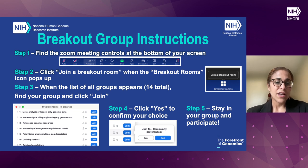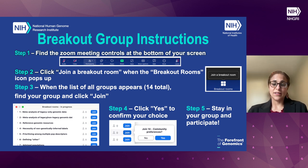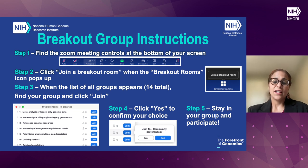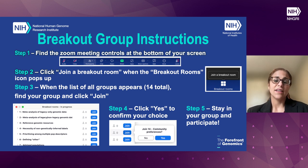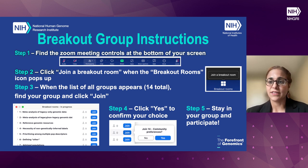That will trigger the list of all the breakout groups available to you — seven total. Find the one you're interested in, click 'join,' and that will trigger another confirmation box. That will take you to the breakout group. We hope you have a really good discussion. The moderators and note takers should have some key guiding questions for you to consider together. Five minutes before your time ends, we will send a reminder — it's an opportunity to wrap up and write your recommendations. Then we'll come back together to discuss recommendations as a large group.